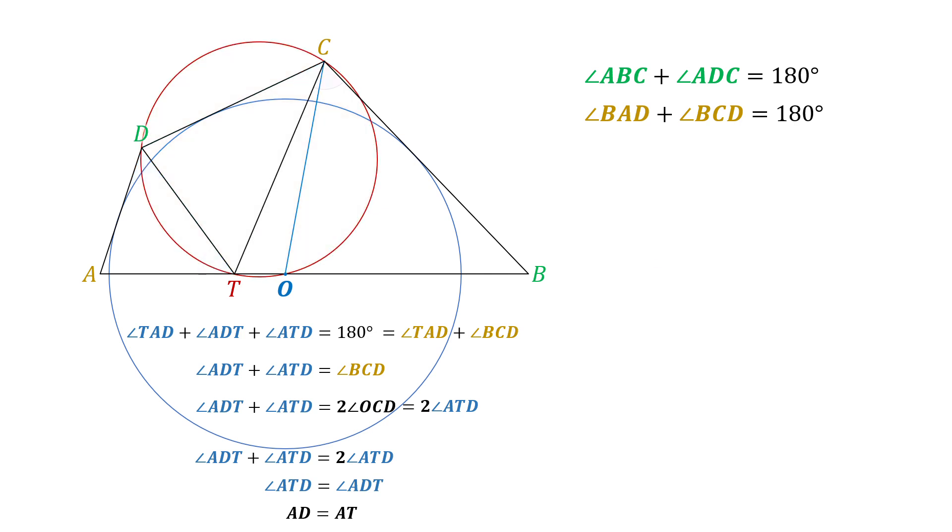By similar reasoning, we find that angle BCT plus angle BTC equal ADC. Since OD bisects angle ADC, we know that angle ADC is twice angle ODC.